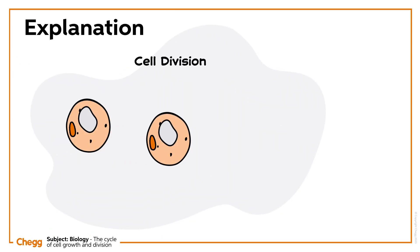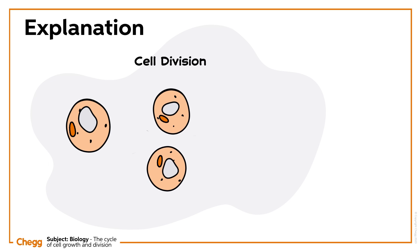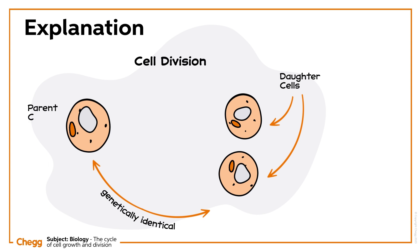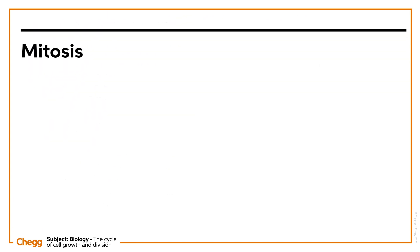Cell division is the process through which a cell divides to make two daughter cells, each genetically identical to its parent cell. There are two types: mitosis and meiosis. Typically, when people refer to cell division, they're usually talking about mitosis.